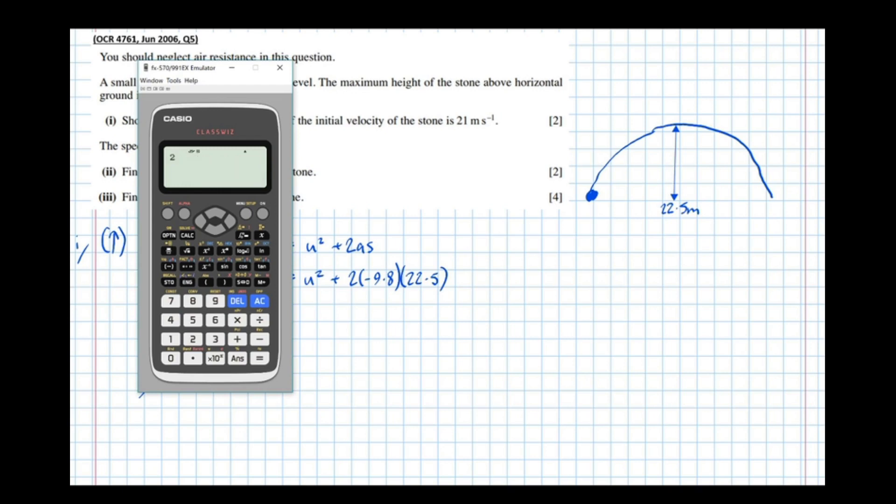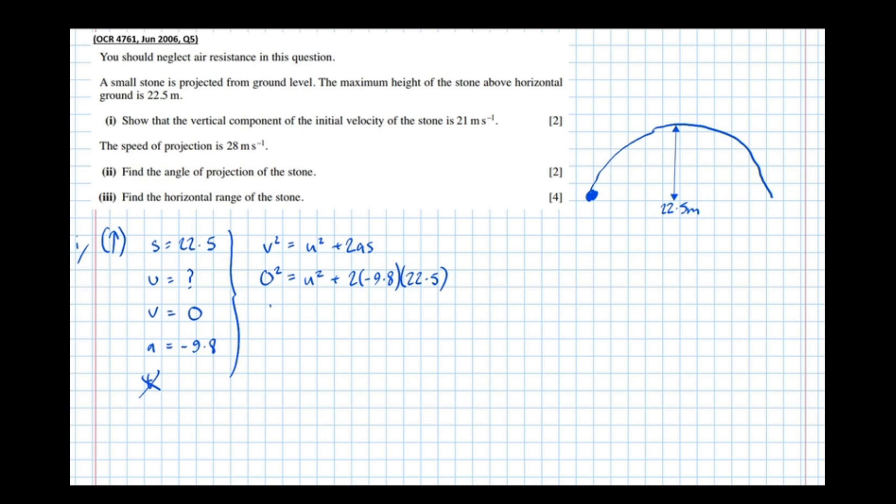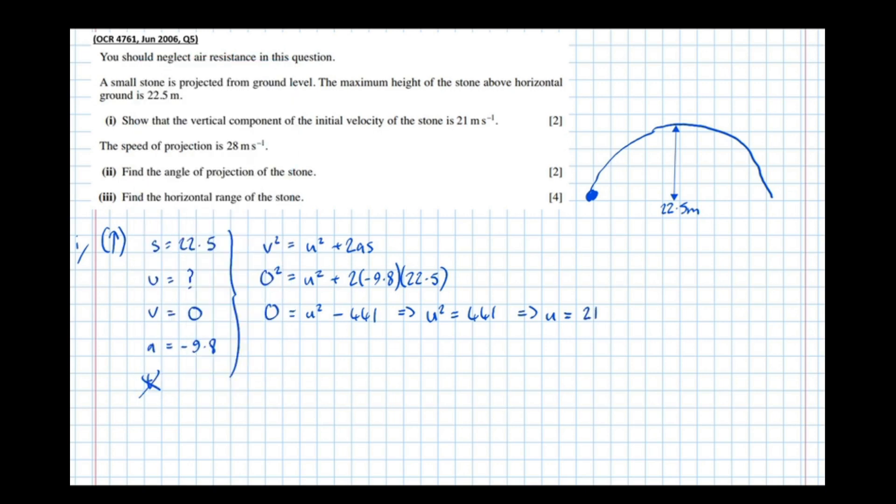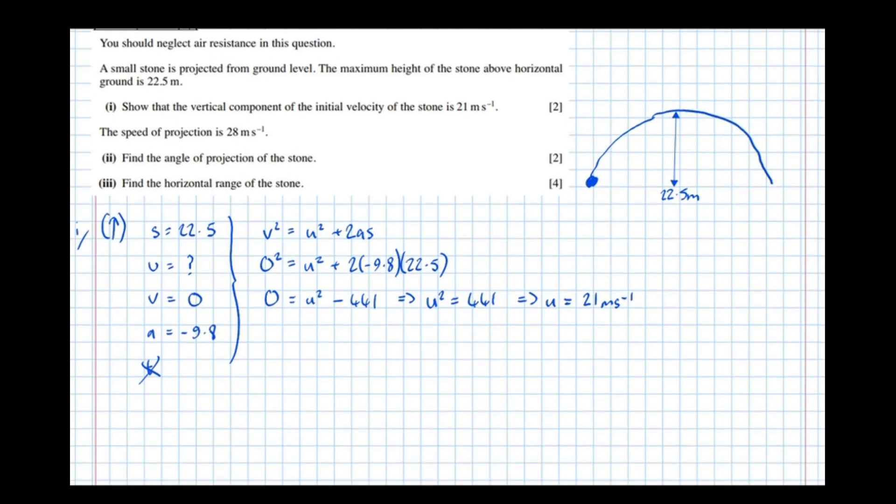So let's work that out. So 2 times minus 9.8 times 22.5 equals minus 441. So we've got 0 equals U squared minus 441, which means that U squared equals 441, which means that U equals the square root of 441, which hopefully is 21. And yes, it is. U equals 21 metres per second.